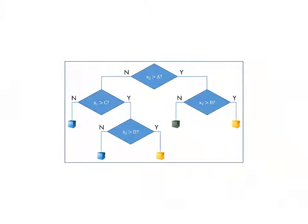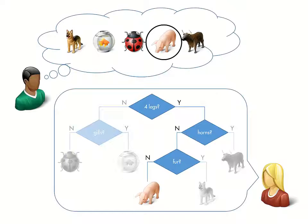Binary decision trees classify observations by creating a sequence of yes-no questions, similar to many common guessing games where players ask questions to figure out what someone is thinking.